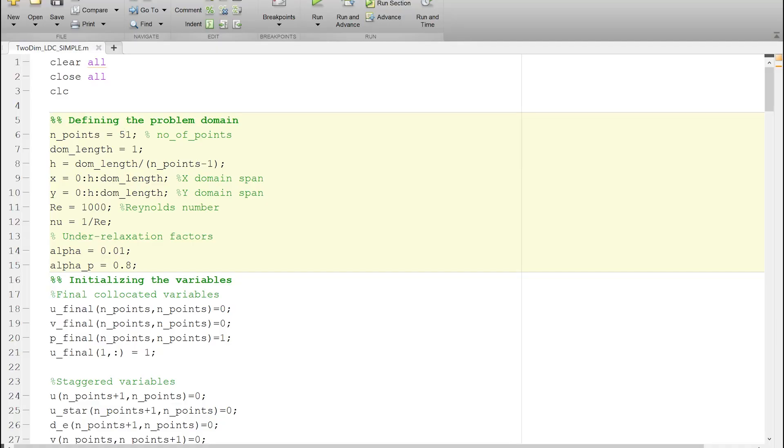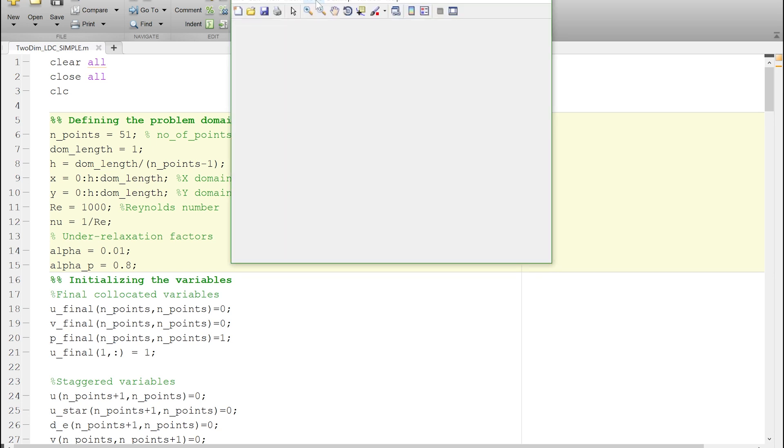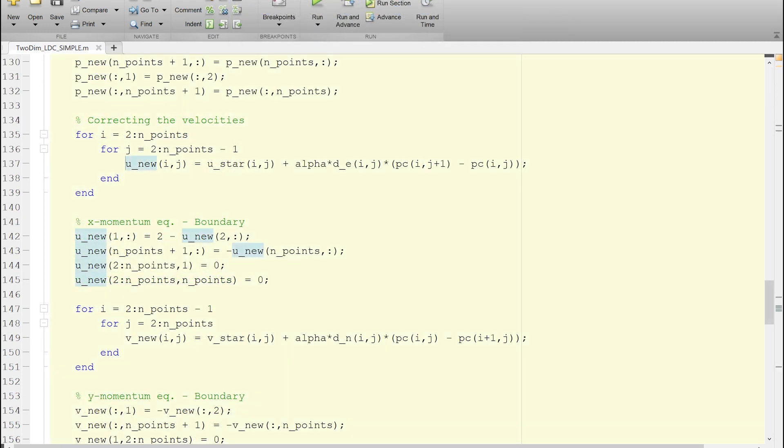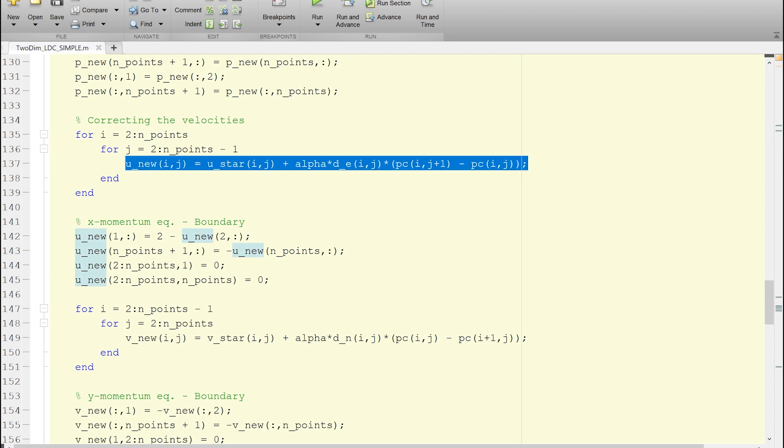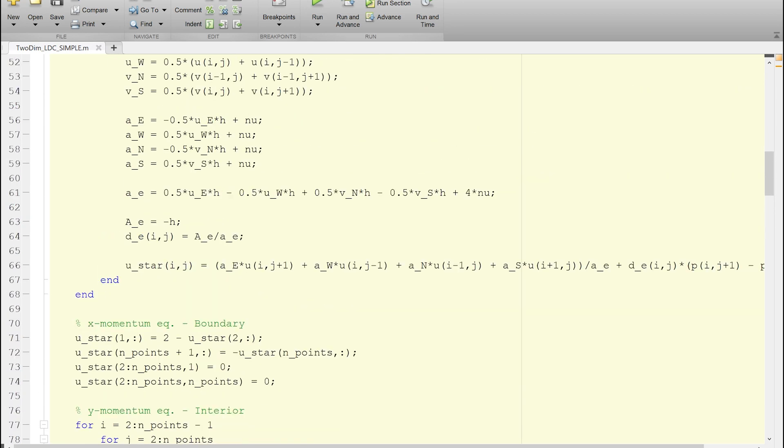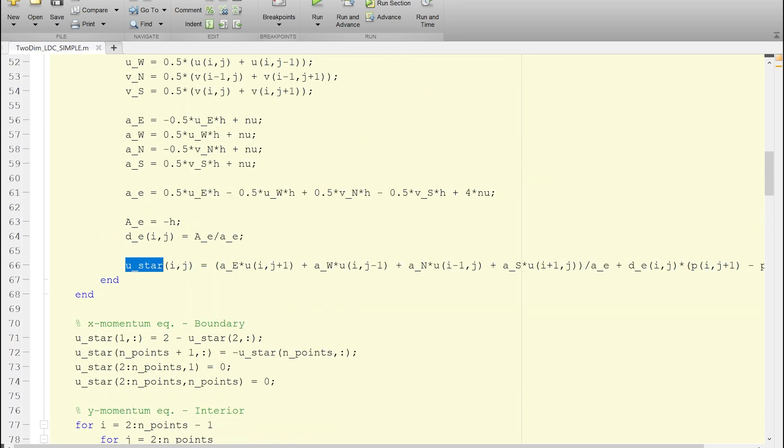This is the code that I presented in the last lecture. I have just changed the Reynolds number here and I'm using slightly lower values of under relaxation factors. If I try to run this particular code, I would see that the code would break after only a few time steps. That is because we were correcting the velocities using the under relaxations here. If you want to run the simple algorithm codes for high Reynolds number, you have to under relax these U star and V star as well.